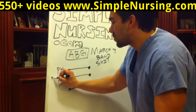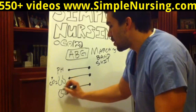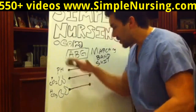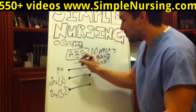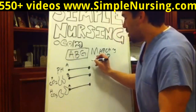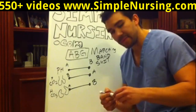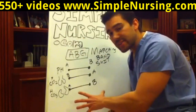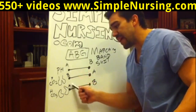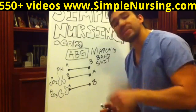It kind of looks like a marching band uniform. Then you write out ABBA and BAB — so ABBA on one side and BAB on the other. Once you've got this figured out — your pH on top, your lungs over your kidneys — and you write out ABBA and BAB, now we're ready to tackle the numbers.